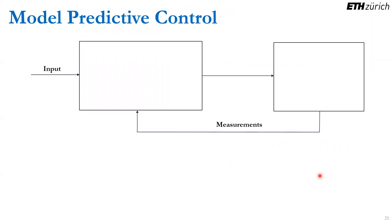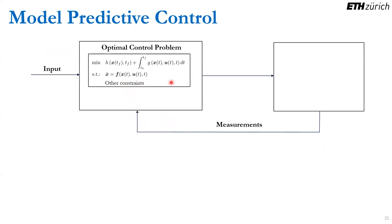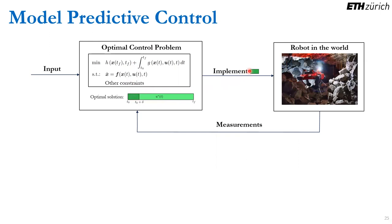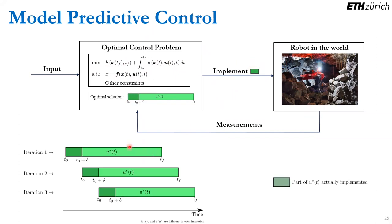In model predictive control, we solve an optimal control problem from the current condition, obtain an optimal trajectory from T0 to TF, implement only the first part of that trajectory on the robot, then measure again, update the input, and solve another optimization problem. This is repeated iteratively, so for each iteration we obtain a new optimal trajectory but only implement its first part.